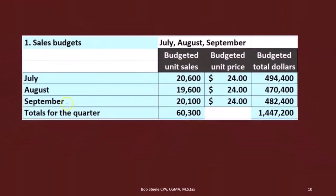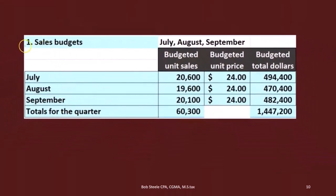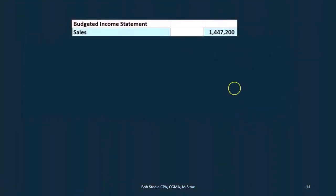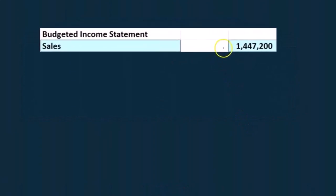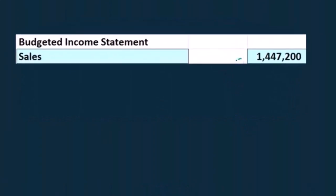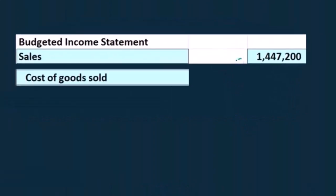So the sales — we're going to jump back to the sales budget, and that's where we're going to have the total sales. We just jump back to step one, the sales budget. That's going to be line one of the budgeted income statement.